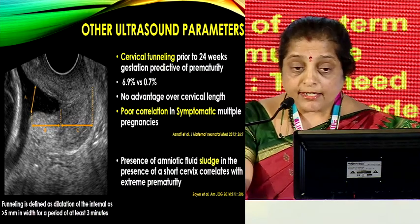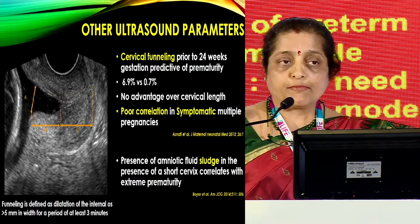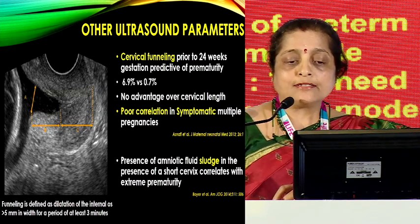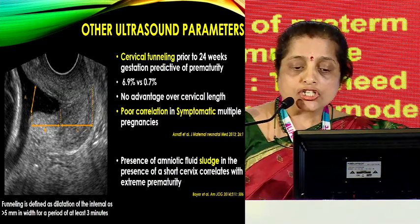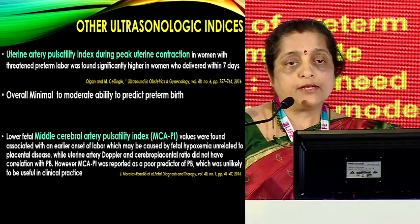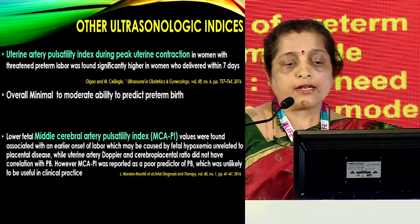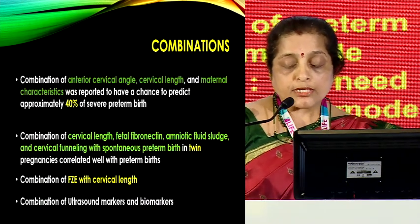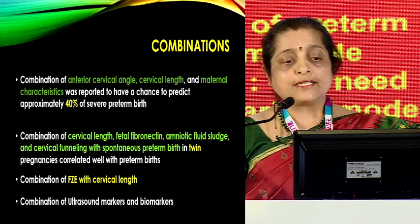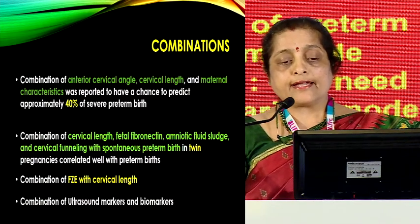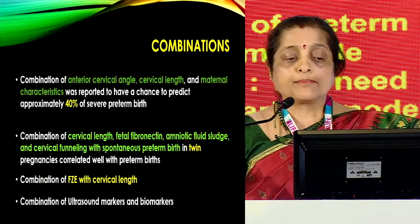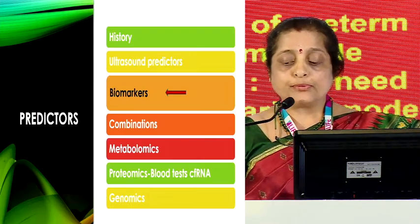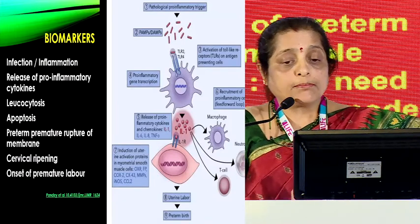Other ultrasound parameters include cervical funneling seen before 24 weeks — predictive of prematurity at 7% versus 0.7% in controls, though of no value in symptomatic multiple pregnancies. Presence of amniotic sludge with a short cervix correlates extremely well with extreme prematurity. Other indices including uterine artery pulsatility index and middle cerebral artery have not shown much value. Surprisingly, though individually each parameter has limited value, a combination — anterior cervical length, anterior cervical angle with cervical length, and maternal characteristics — shoots the predictive value up to about 40%.